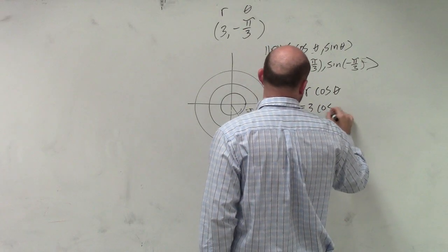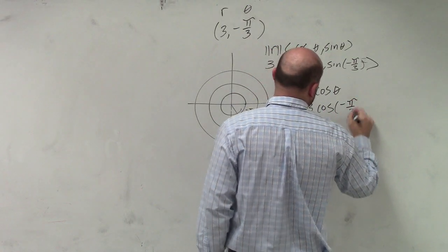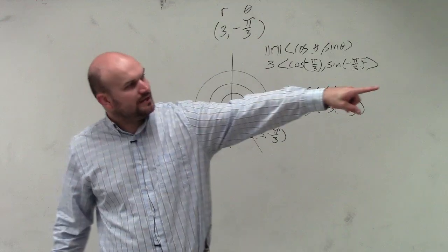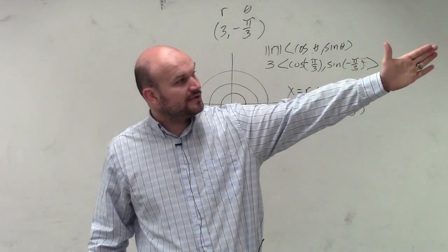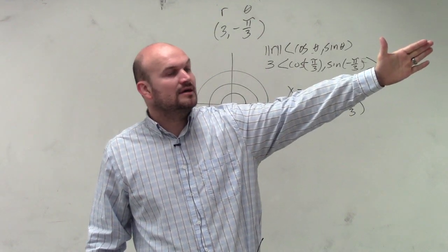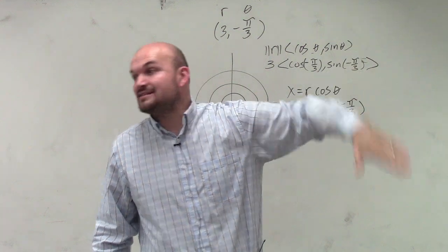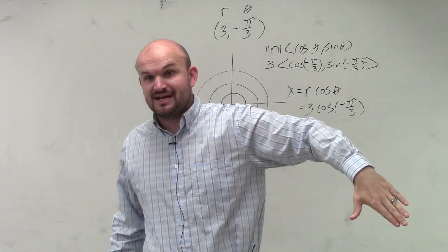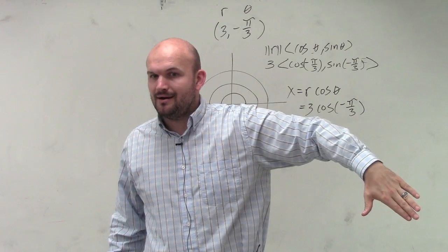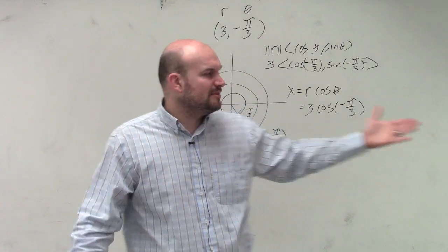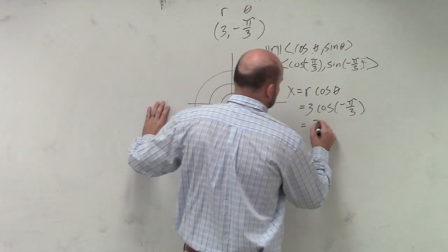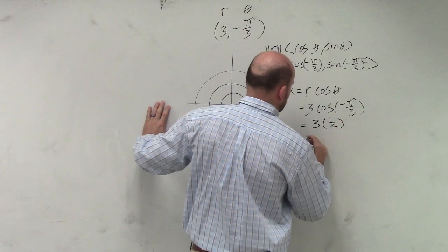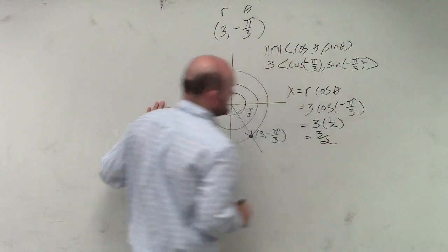So 3 times the cosine of negative π/3. Thankfully, I left that up there. Let's go and look at that. π/3, the cosine is 1/2. But if we're looking at negative π/3, that's going to be in the fourth quadrant. Cosine is still going to be positive. So it's still just going to be 1/2. So that's going to be 3/2.